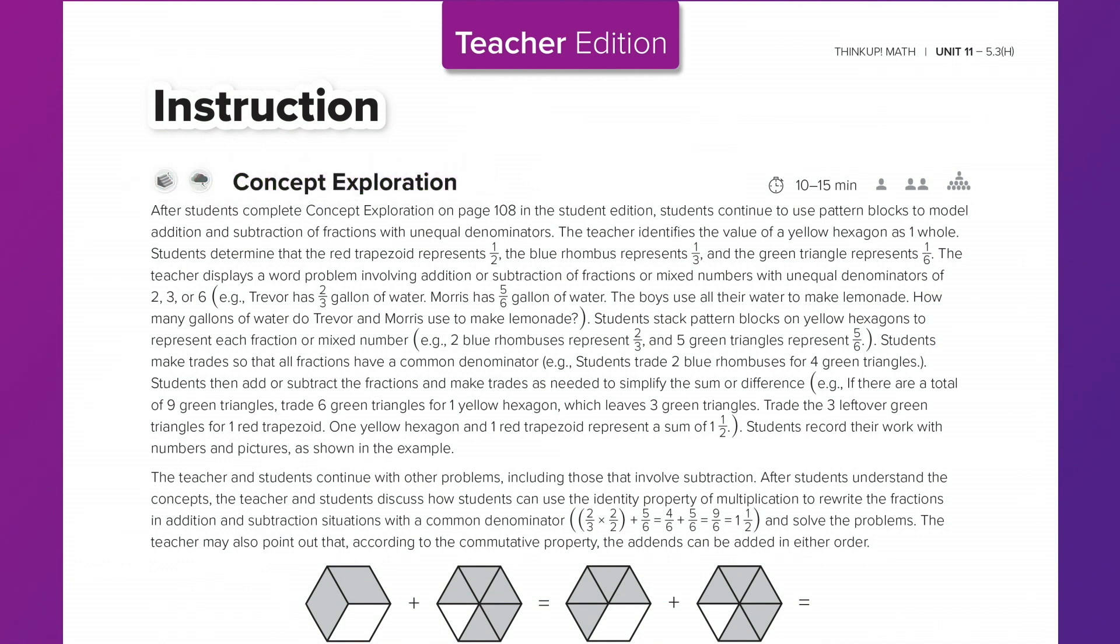For example, it is suggested that students should discover that the red trapezoid represents one-half, the blue rhombus represents one-third, and the green triangle represents one-sixth.